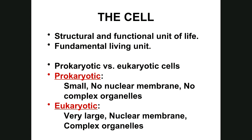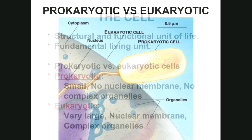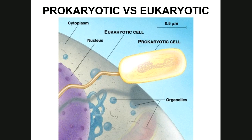Eukaryotic cells have a nuclear membrane — any cell with a nuclear membrane is eukaryotic. They have complex, membrane-bound organelles, and those membranes allow processes to occur inside those structures that are not found anywhere else in the cell. The DNA is found only inside the nucleus. Eukaryotic cells include animal cells, plant cells, fungi, and protozoans.